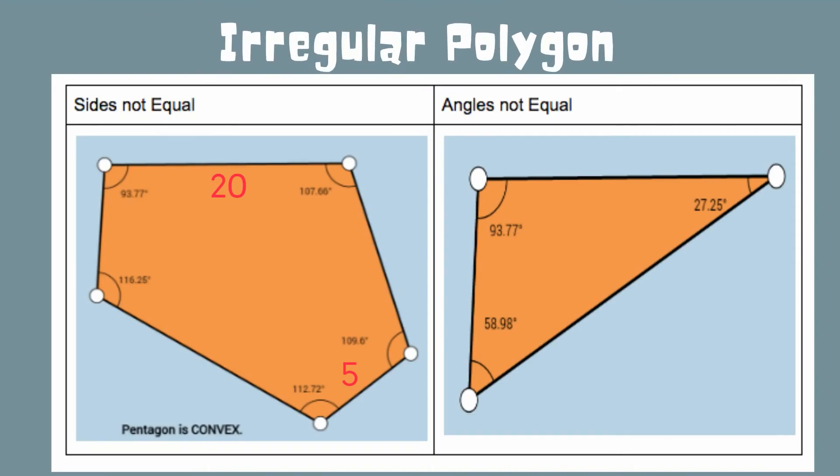Irregular polygons do not have equal side lengths and equal angle measures.